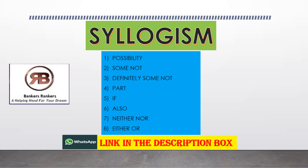Welcome to Bankers Rankers. In today's video we are going to discuss a very important topic from the exam point of view: syllogism. In this video we are going to explain how to solve problems with the following cases: possibility, some not, definitely some not, part if, also, neither nor, and either or. These concepts will be explained with the help of a few questions. This is the first part of a very long series; in each part we will discuss 10 questions based on different cases.